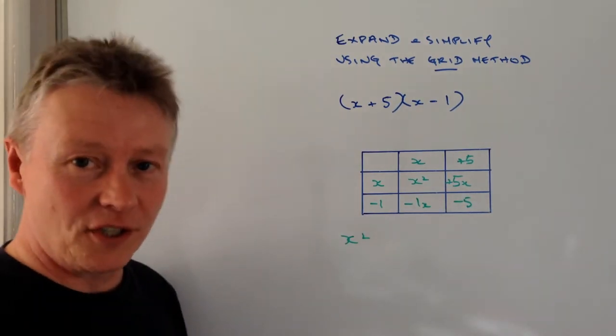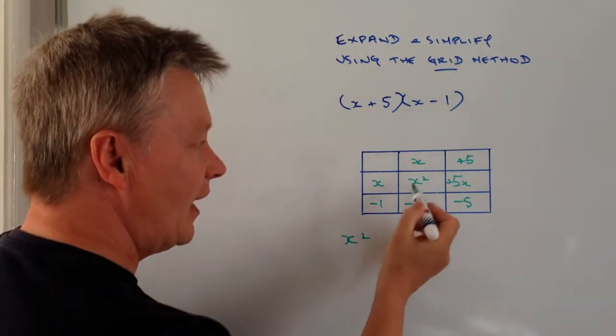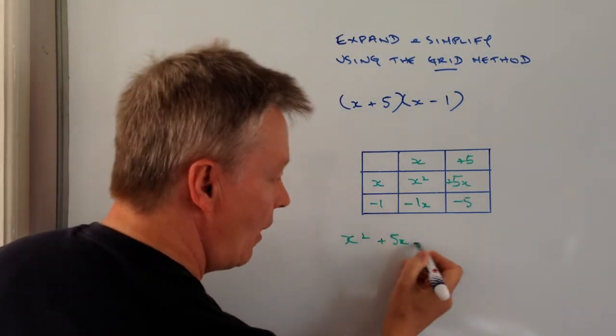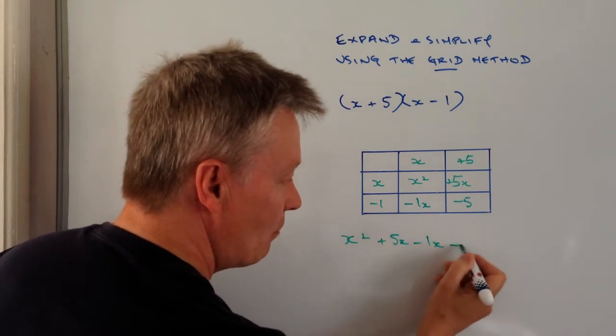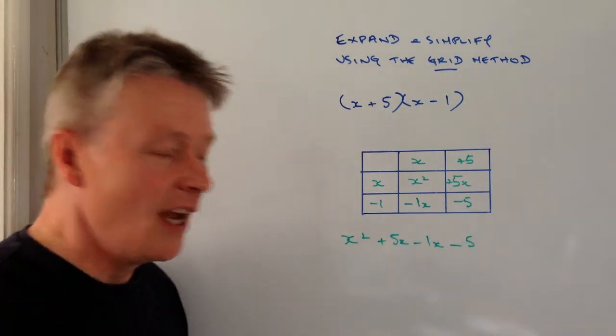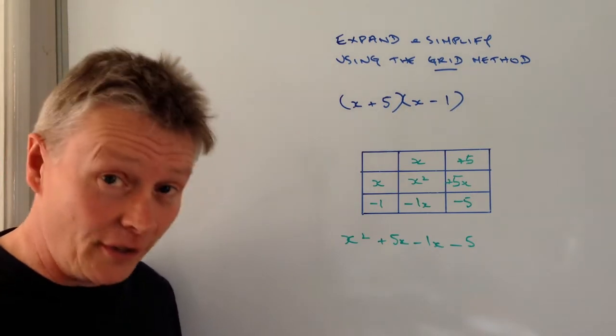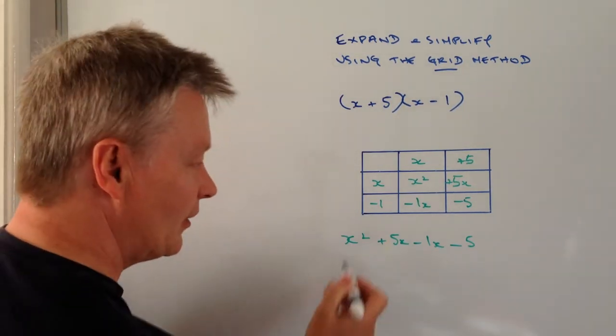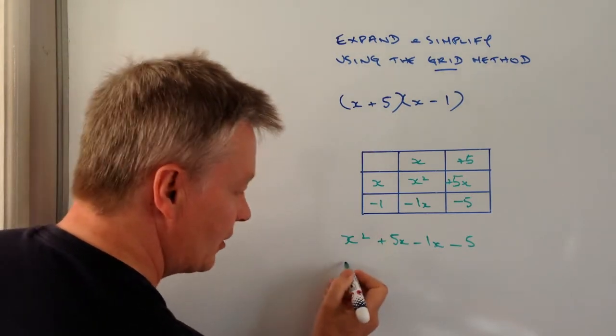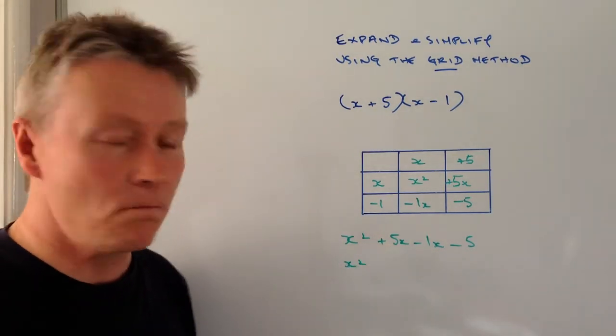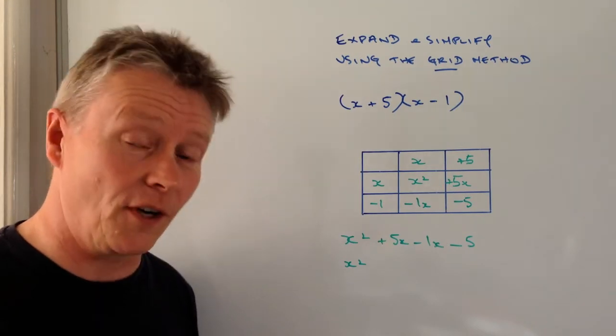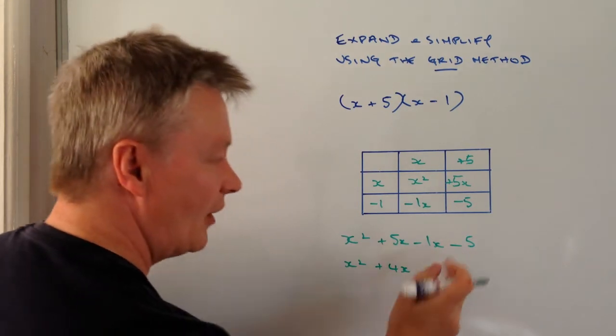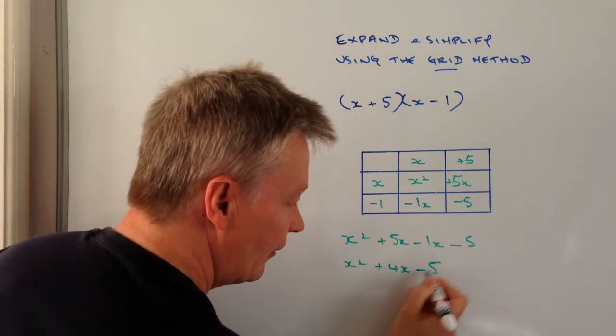And then if I write all these terms out then I get x squared, as I've written it, plus 5x minus 1x and then minus 5 at the end. And then if I gather those like terms together, in other words what I do is I put the similar terms all together. I end up with x squared on its own, which is fine, and I've got plus 5x minus 1x, well plus 5 minus 1 is going to be plus 4x, and then I've got minus 5 at the end.